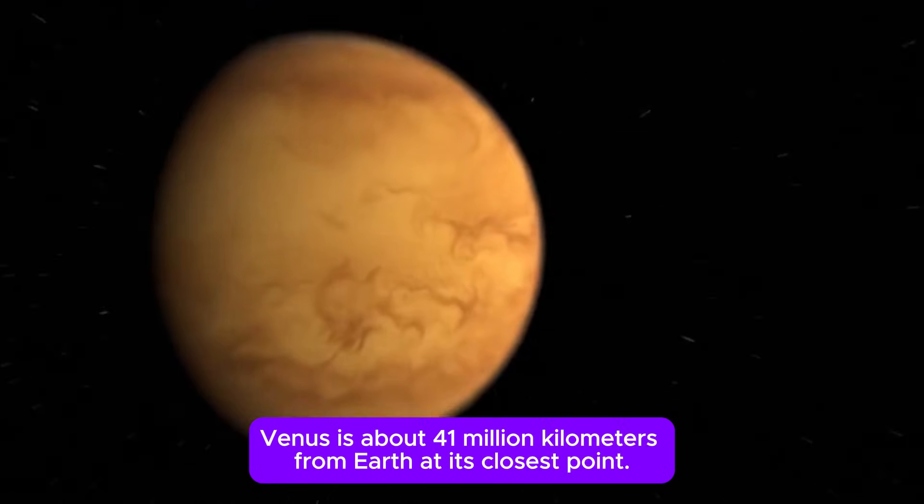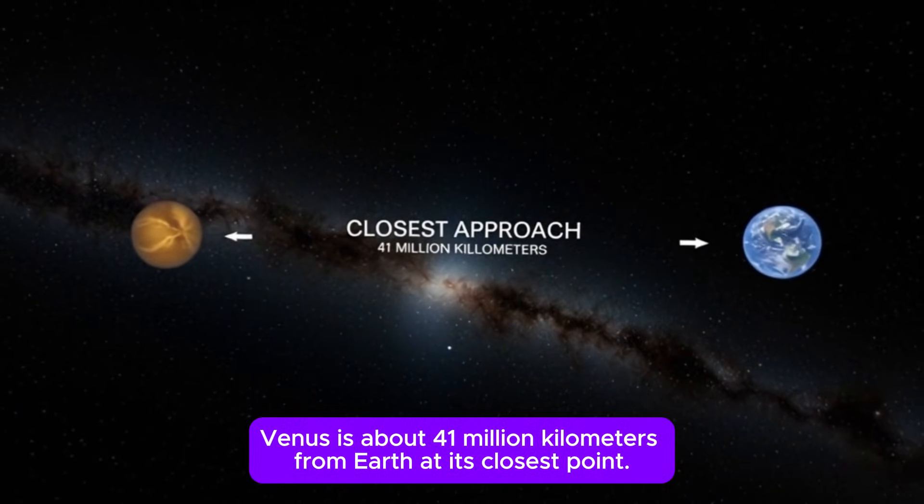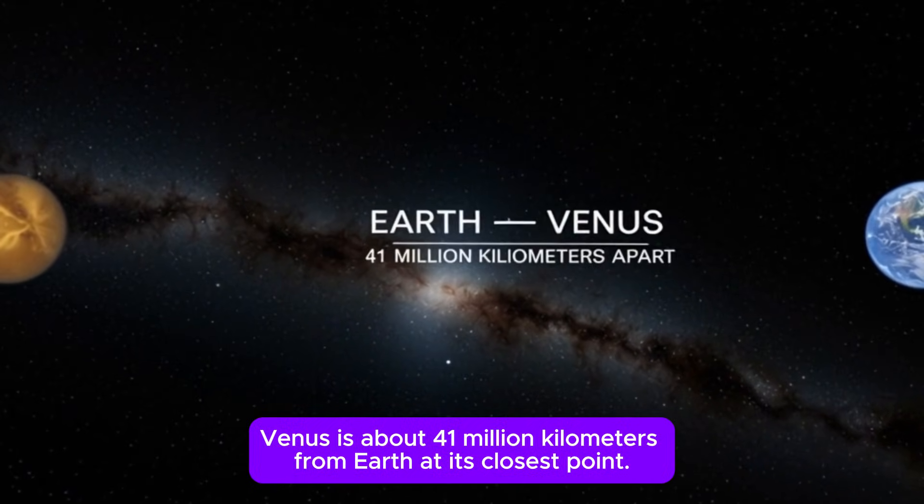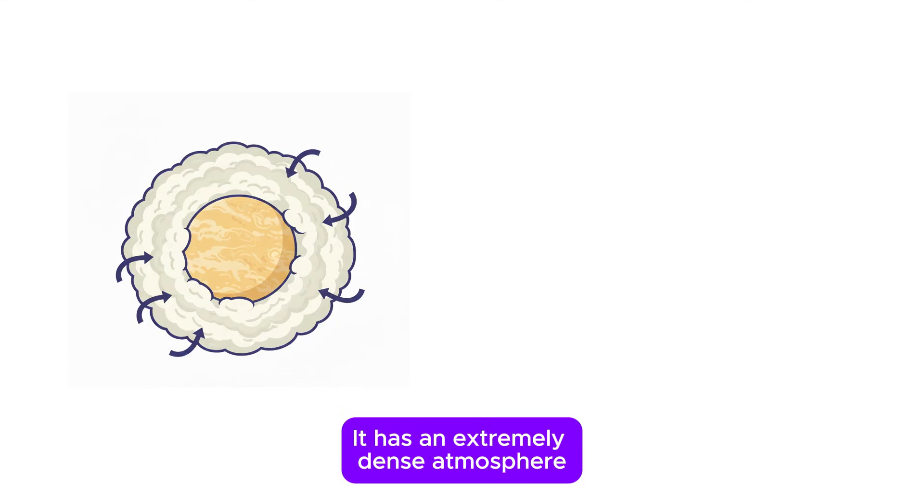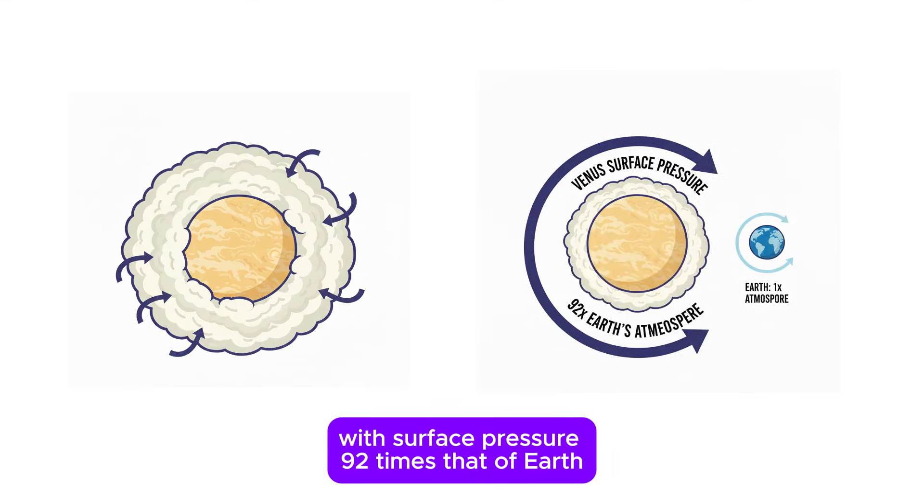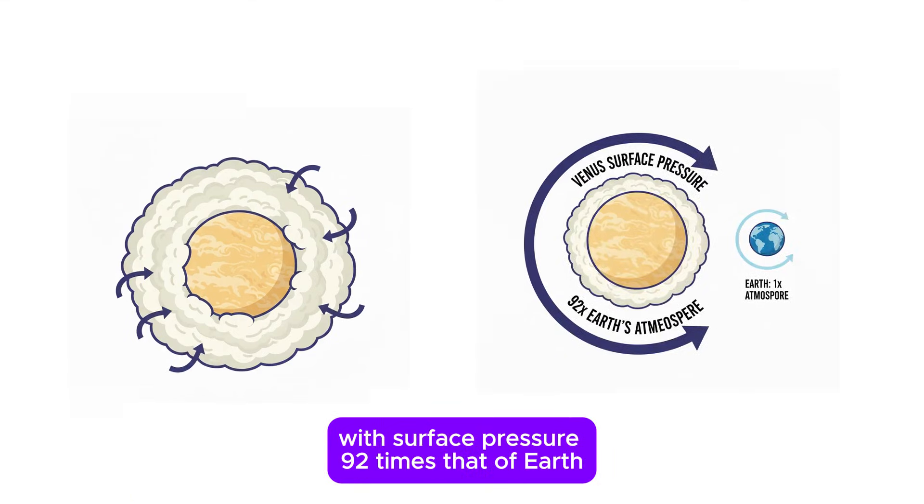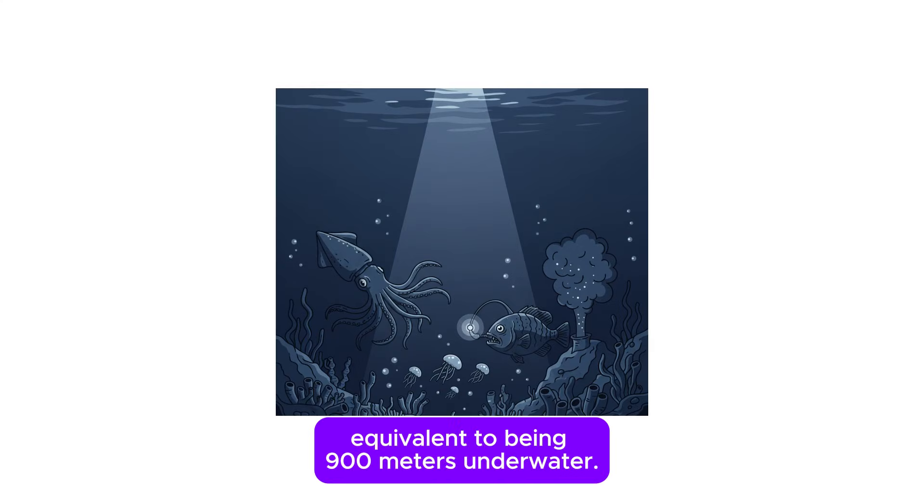Venus. Venus is about 41 million kilometers from Earth at its closest point. It has an extremely dense atmosphere, with surface pressure 92 times that of Earth, equivalent to being 900 meters underwater.